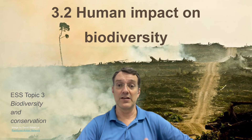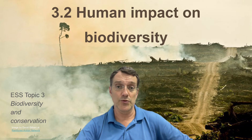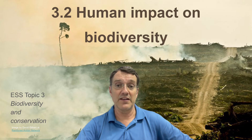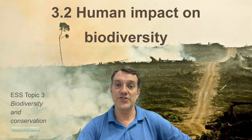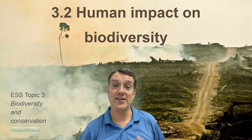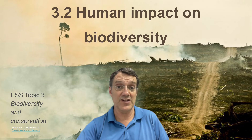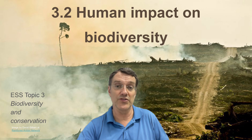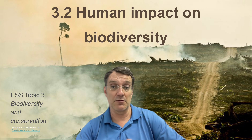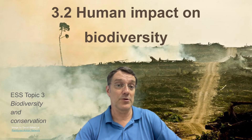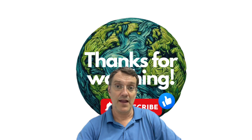Human impacts on biodiversity involve complex interactions between direct threats, indirect pressures, and social systems. Understanding these relationships allows us to develop effective conservation strategies. The IUCN Red List helps us track species status and prioritize conservation efforts. Different stakeholders bring different perspectives and resources to conservation work. By learning from both extinction failures and recovery successes, we can make better decisions about protecting Earth's biodiversity in the future. Until next time, happy learning!